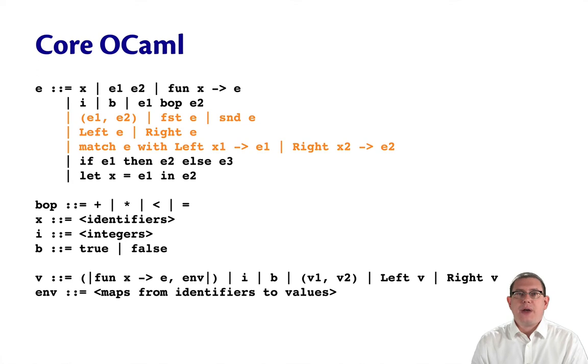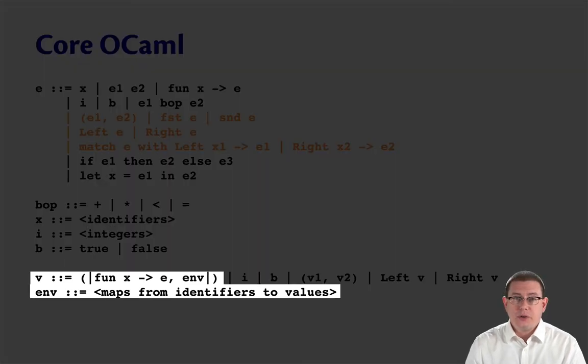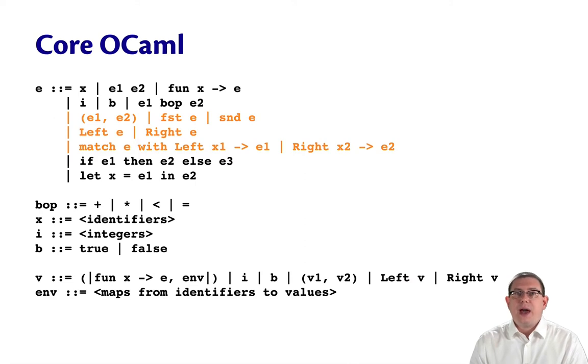Notice that our values now contain function closures, which themselves contain environments. So we have a situation, much like we had with references and locations earlier, where we have a kind of value that can't be written in the syntax of the language. This is another example of how sometimes not all values are themselves expressions.